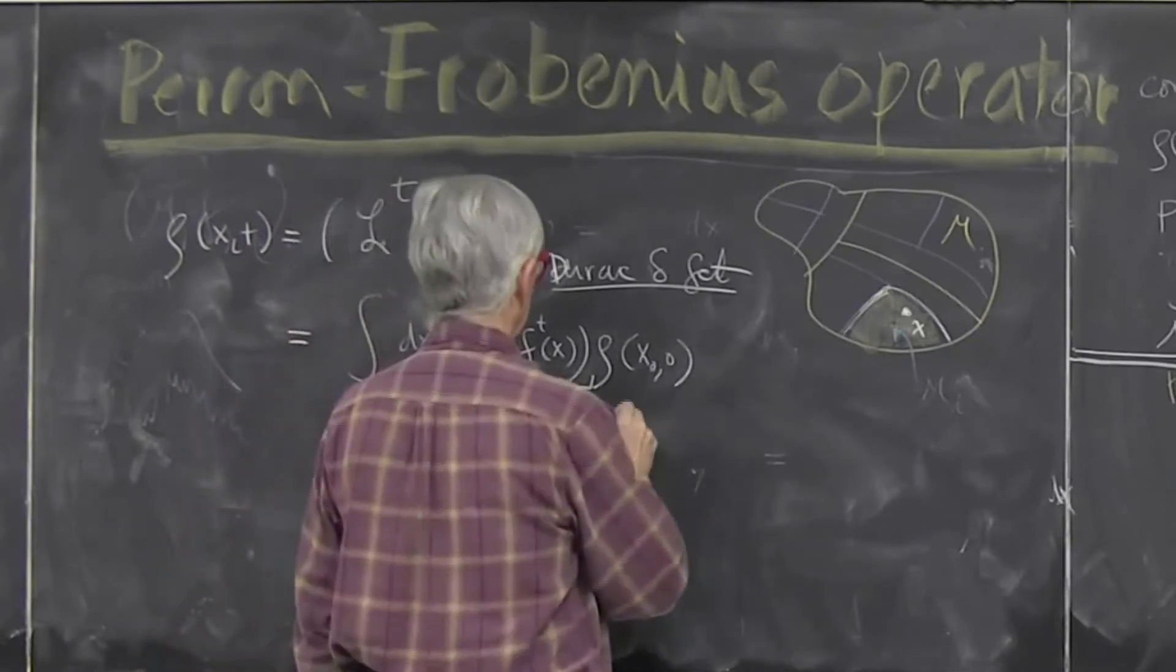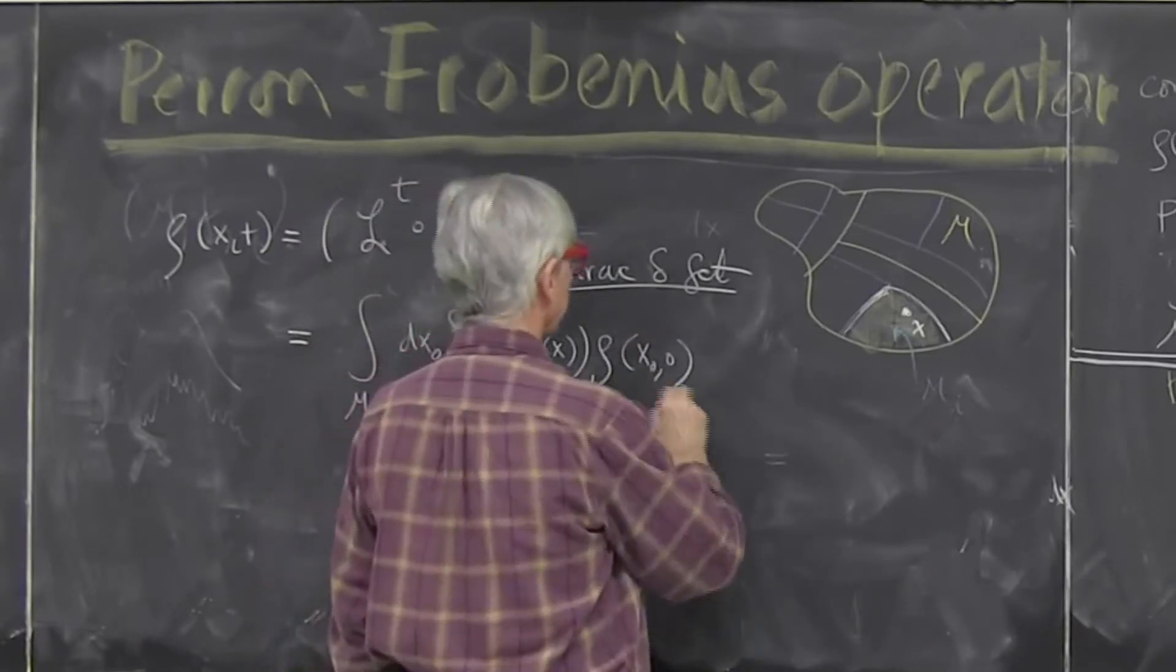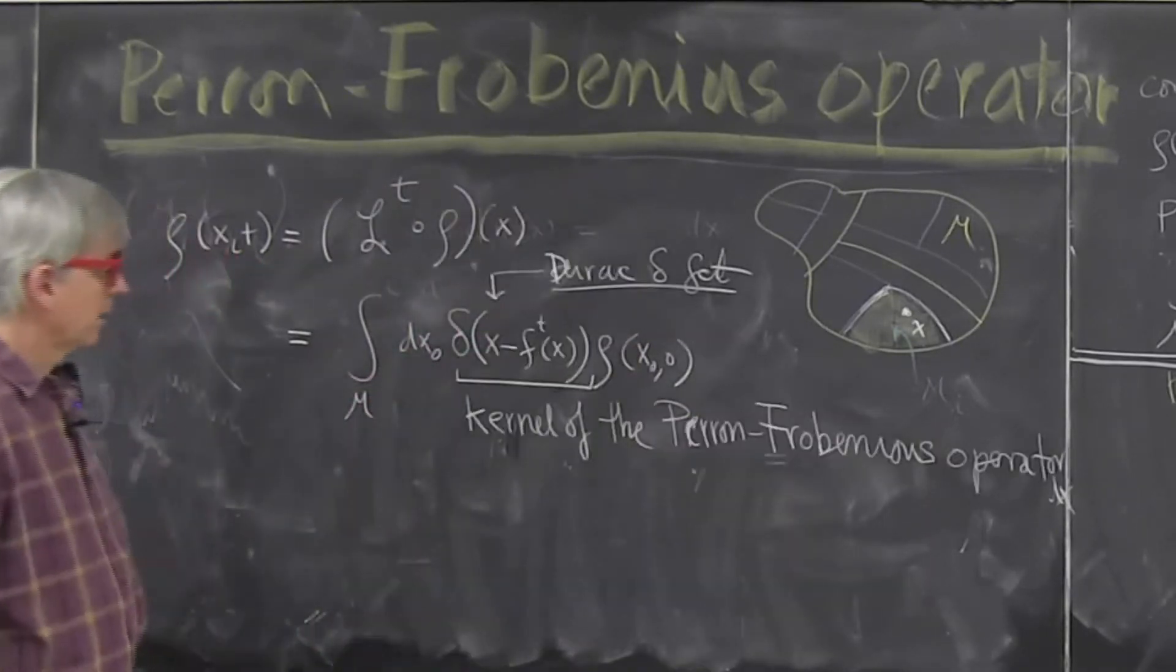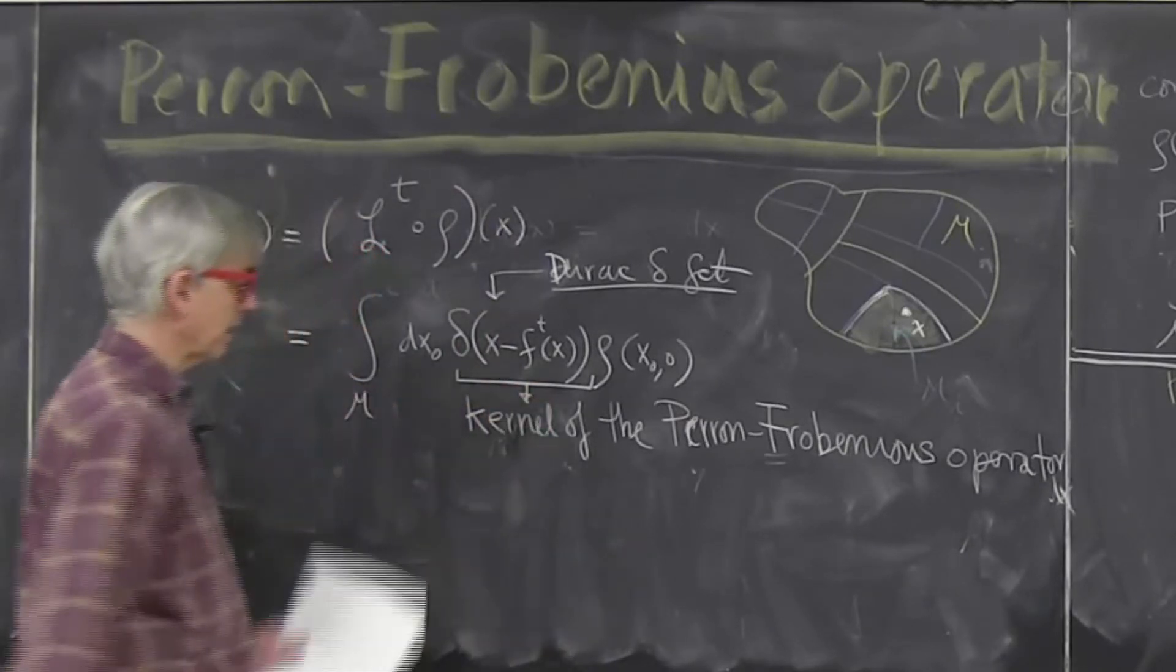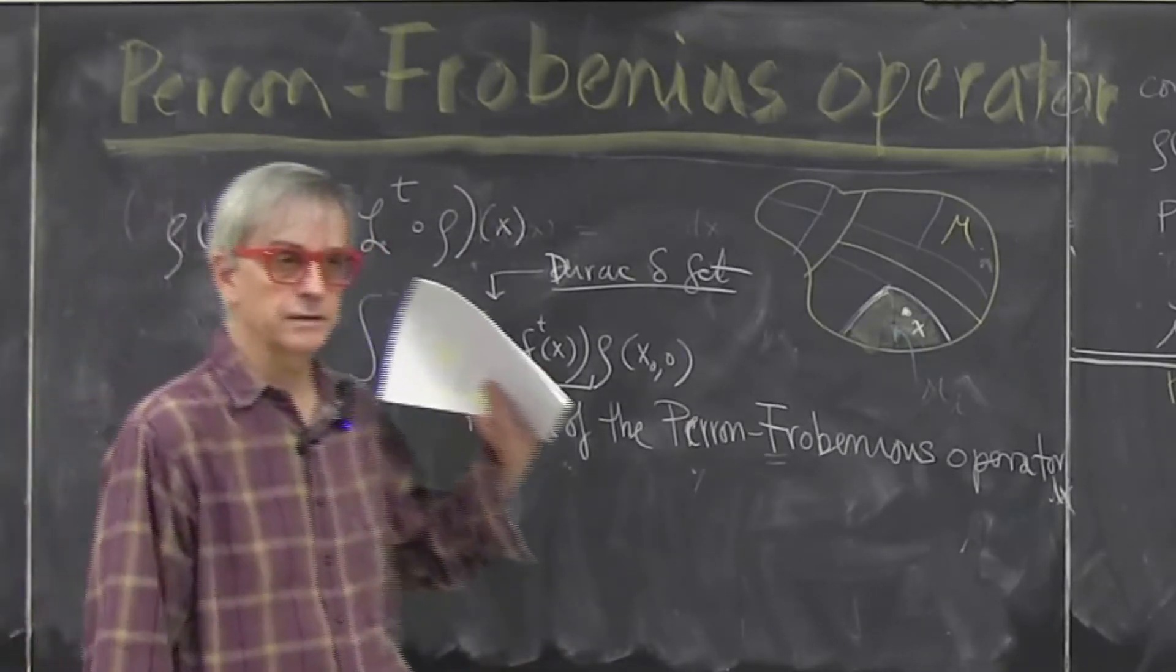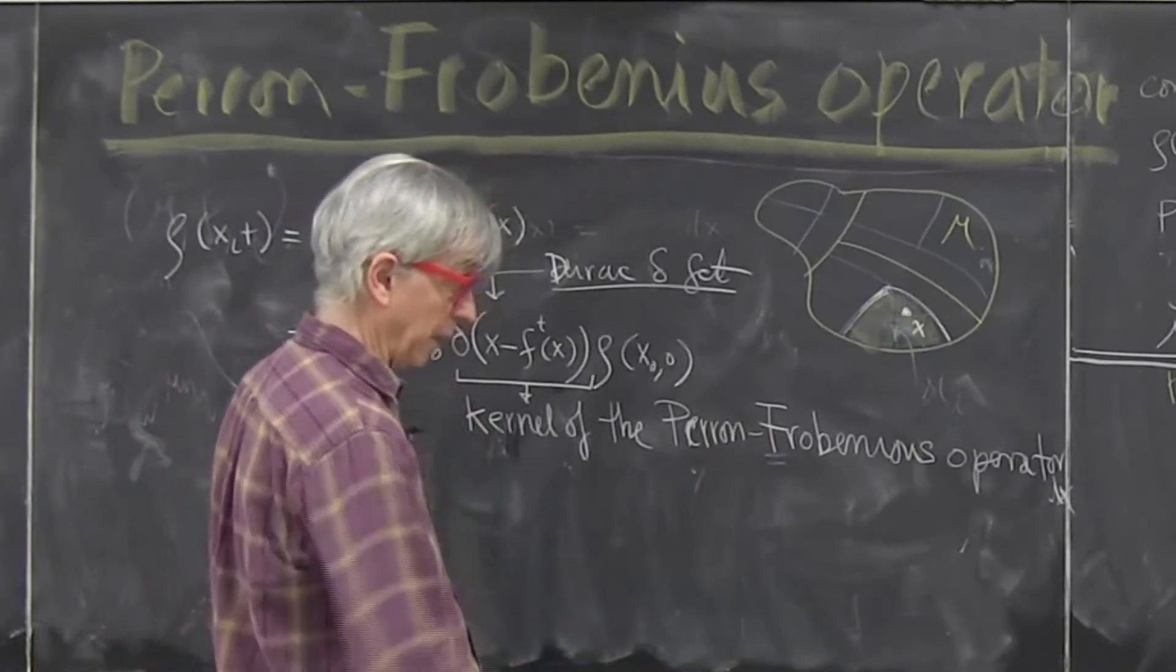This thing will be called kernel but I'll always drop the word kernel because it's too boring, of the Perron-Frobenius operator. Now if you have only mathematical training and you have these states for Dirac delta functions then everything I say will be in the books but it's always written in this form.